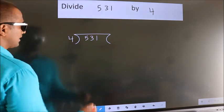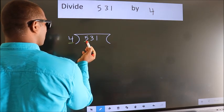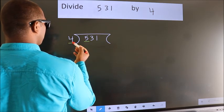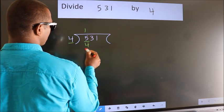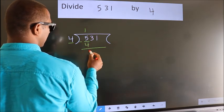Next. Here we have 5, here 4. A number close to 5 in 4 table is 4 once 4. Now, we should subtract. We get 1.